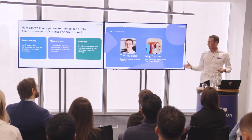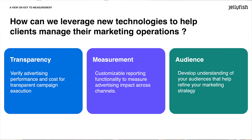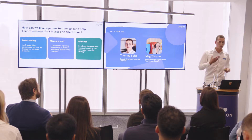So why do you want to use this kind of infrastructure? Because it will help us to leverage new technology to improve your marketing operations on three main axes. The first one is transparency. Thanks to this granularity, we will be able to verify the advertising spend and advertising cost, which will bring more transparency across the entire supply chain. The second one — one of the most important — is measurement. It will help us to create custom reports, especially for attribution reports.